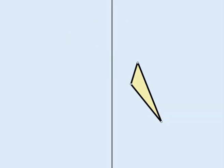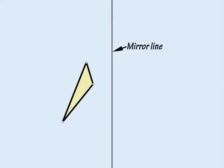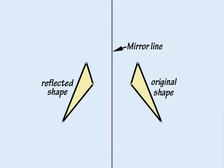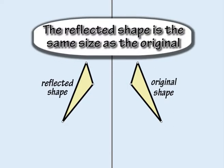You reflect a shape by flipping it over a mirror line. Each point on the shape is the same distance from the mirror line before and after the reflection, and the reflected shape is the same size as the original shape.